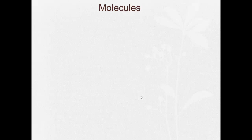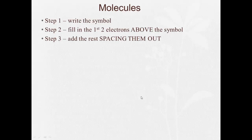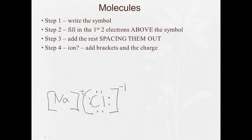So molecules. Step 1, write the symbol. Step 2, fill in the first two above the symbol. Add the rest spacing them out. Now, if it's ionic, we'll add brackets and a charge. So, like for sodium chloride, we have Na, and like we did before, we get Na plus Cl, 1, 2, 3, 4, 5, 6, 7, 8, brackets, minus 1. So, if it's ionic, for an ionic molecule, it's going to be Na plus with a Cl minus.